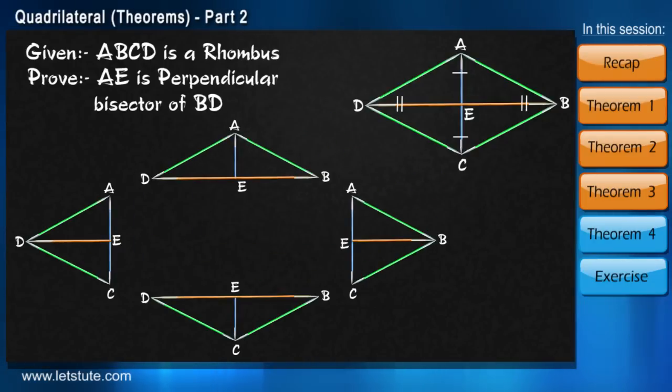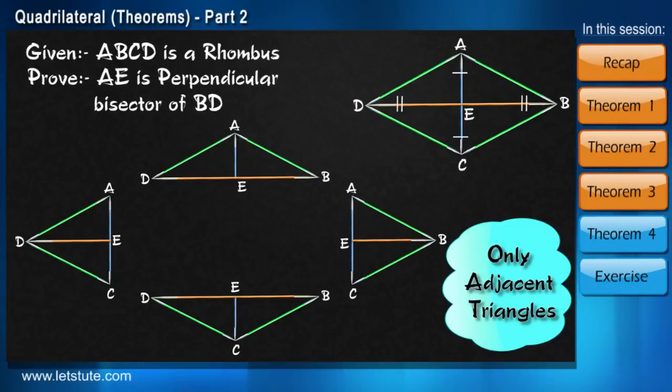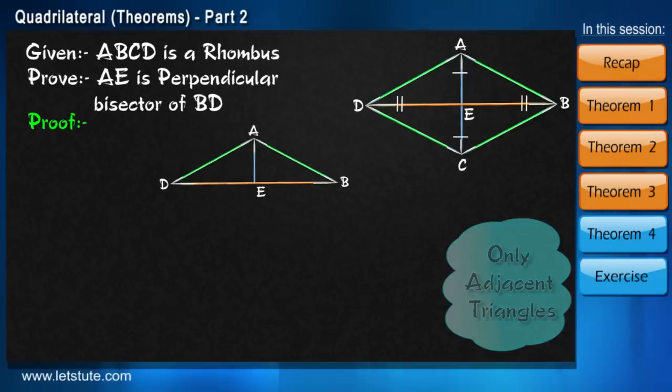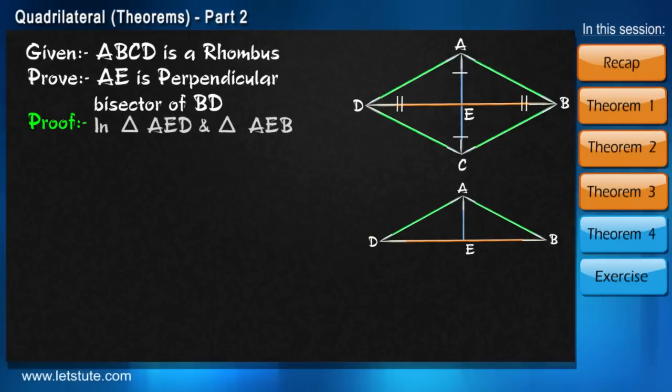Again there are four options to choose two adjacent triangles. And here is the proof in simple lines. We take triangles AED and AEB. Because we have to show AE is perpendicular to BD.